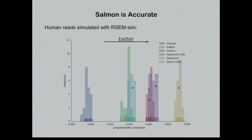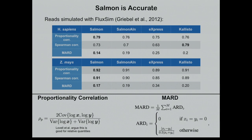How well does it do? On simulated data using an RNA-seq simulator called RSEM-Sim on the human transcriptome, the histograms of correlations over replicates show that Salmon is doing a good job recovering the known true abundances. This holds up with a different simulator — Flux Simulator — and different organisms such as Zea mays, under many different measures including Spearman correlation, absolute relative difference, and covariance normalized by variance.